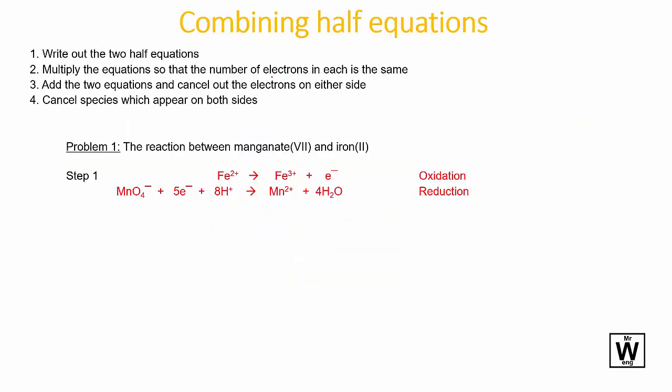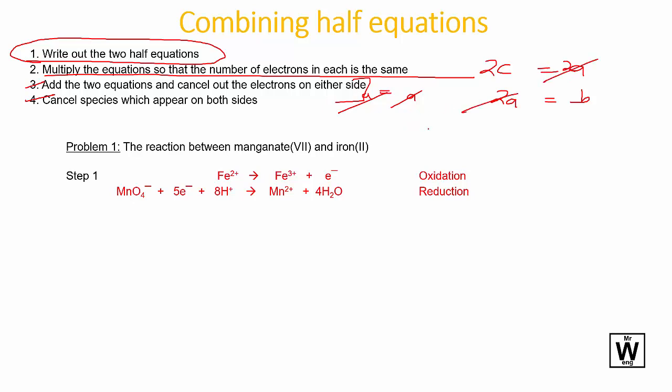All right, and the final thing we need to do now is once we have balanced these two half equations using those steps that we just saw, we need to add them together. And once we add them together, we can cancel out things that are on both sides of the equation. But the trick is you may need to multiply. So if you have 2a equals b, and then c goes to a, you want to multiply these both sides by two to cancel things out, so that can be a little bit tricky.